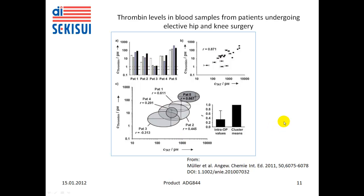Here is a figure taken from this publication. It describes thrombin levels in blood samples from five patients undergoing elective hip and knee surgery. In all cases, elevated thrombin concentrations are seen. At first glance, these thrombin concentrations correlate well with the levels of thrombin-antithrombin complexes, but a more detailed analysis at the individual level shows quite some discrepancy, meaning that TAT complexes do not accurately reflect the current state of thrombin levels in a given sample.